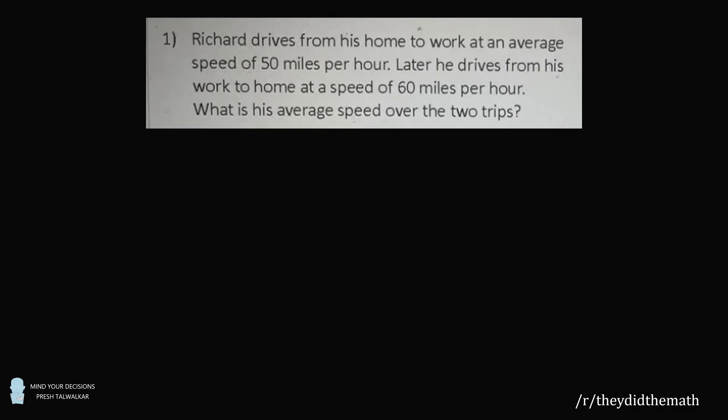Hey, this is Presh Talwalker. A problem was posted to Reddit They Did The Math, which is causing a lot of confusion. Richard drives from his home to work at an average speed of 50 miles per hour. Later, he drives from his work to his home at a speed of 60 miles per hour. What is his average speed over the two trips?